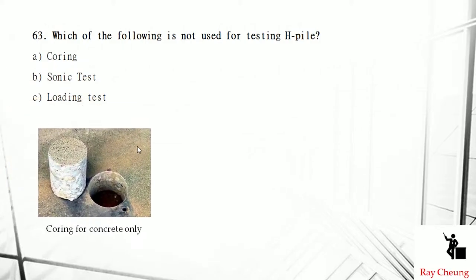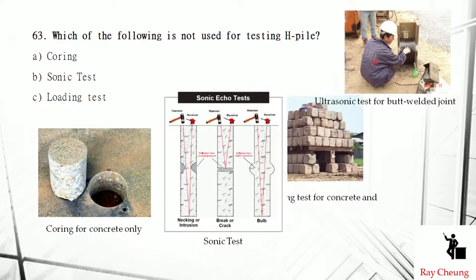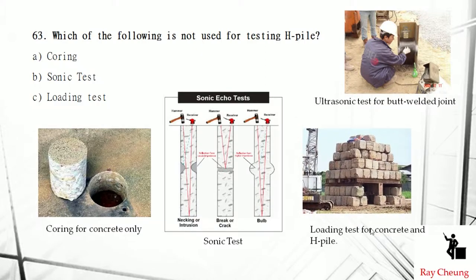The first testing method is coring — you take a core from the concrete to test its strength. The second is the sonic or ultrasonic test, which checks the pile connection between one element and another — they use a sensor to connect together. The third is the load test, which is suitable for H-piles and bored piles. So if the question asks which is not used for testing, most likely you take out coring.